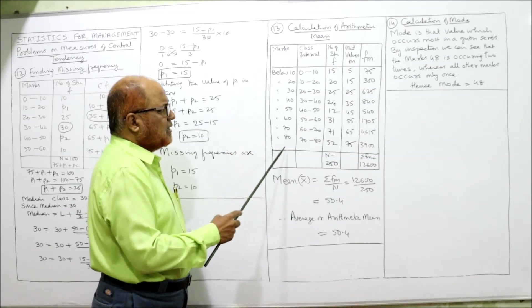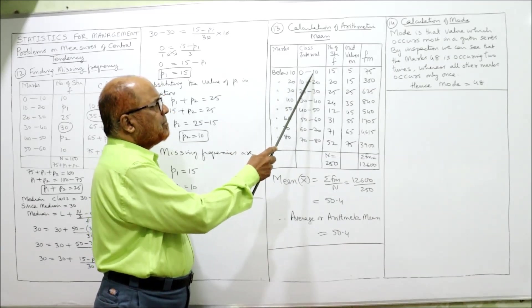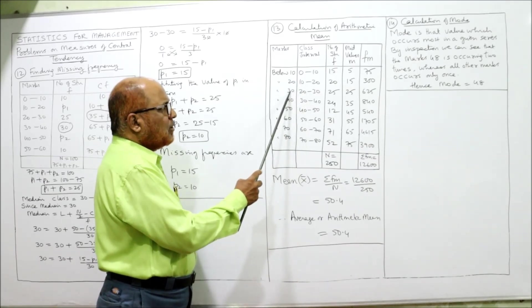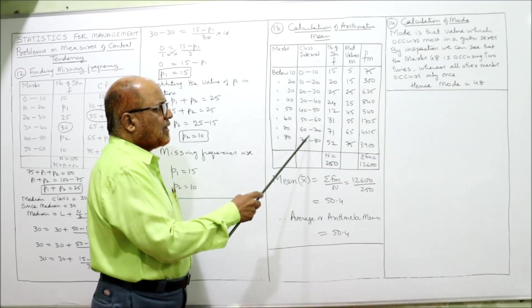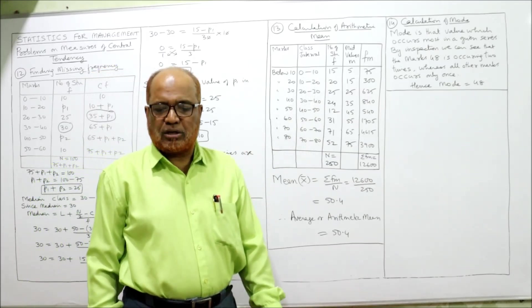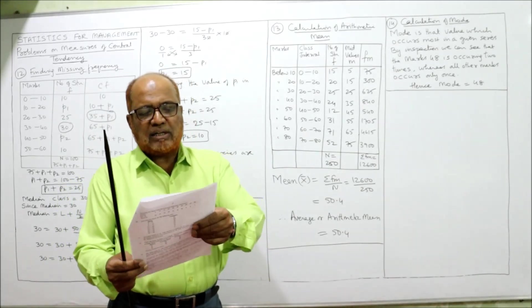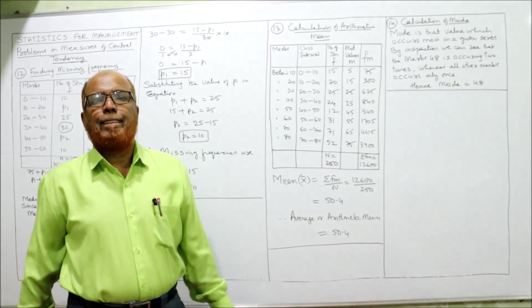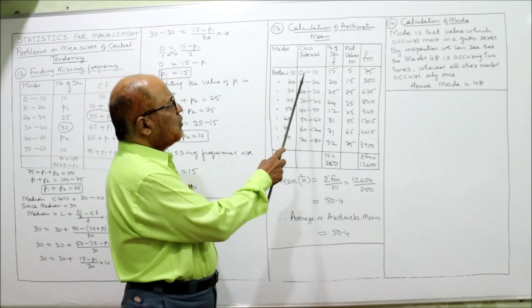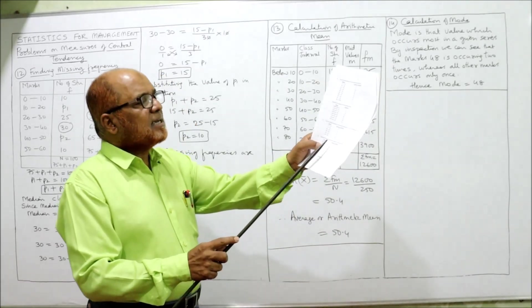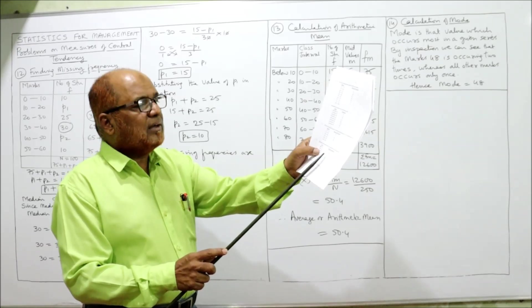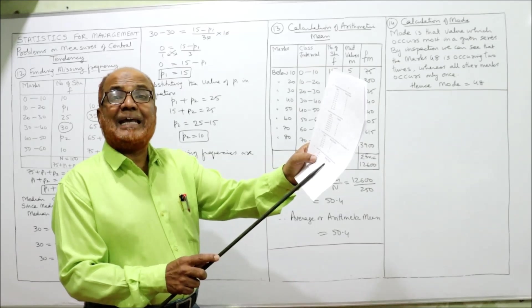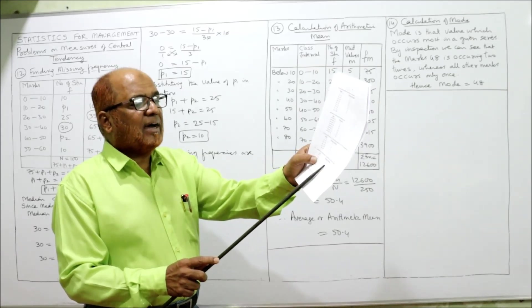We convert the class intervals to: 0–10, 10–20, 20–30, 30–40, and so on. For the frequencies: below 10 gives 15 students for 0–10. Below 20 has frequency 35, so for 10–20 we subtract: 35 − 15 = 20.